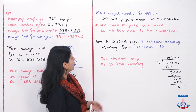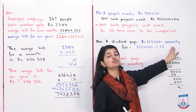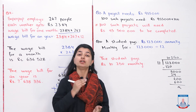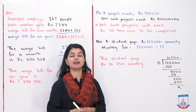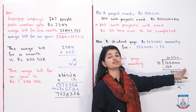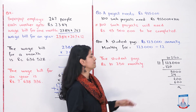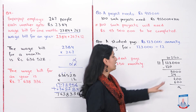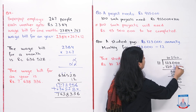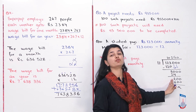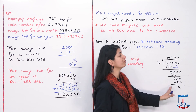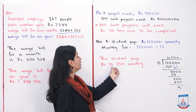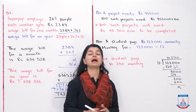Question number 10: A student pays Rs 123,000 annually. You need to find the monthly fee. Since the annual total is given, you divide by 12 to find the monthly amount. Setting up 123,000 divided by 12: 12 into 12 is 10, giving partial steps; 12 times 2 is 24, subtract and copy down; 12 times 50 is 600 with no remainder. The monthly fee is Rs 10,250.